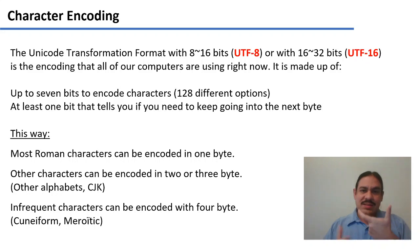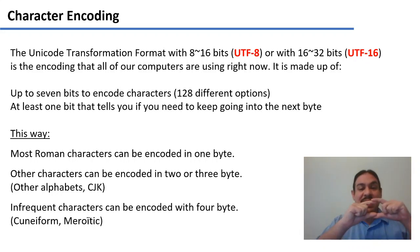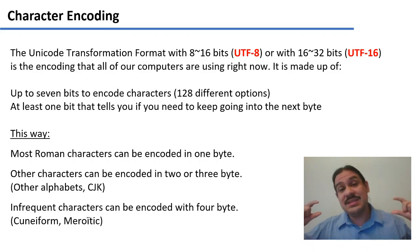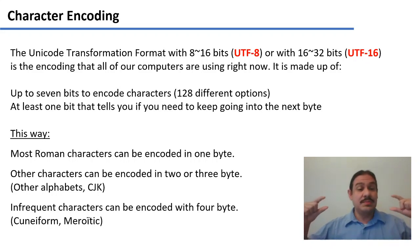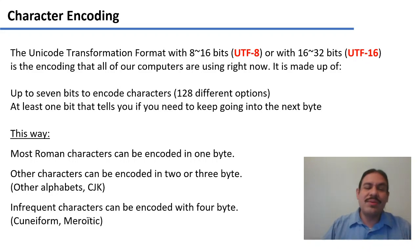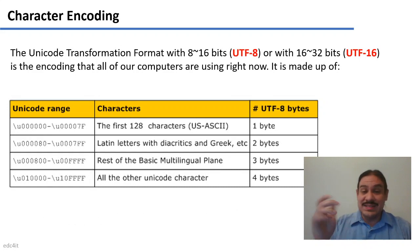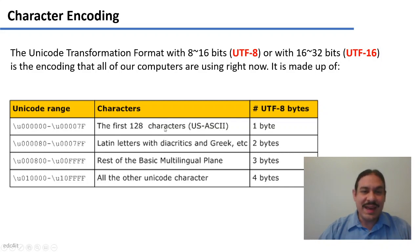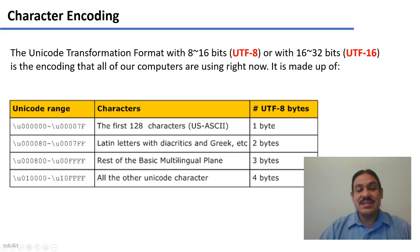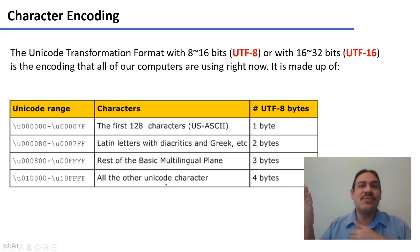With this variable-size approach, you can represent most Latin and Roman characters with one byte, many other alphabetical systems with two or three bytes — for example, writing systems from India use three bytes, characters from Spanish use two bytes — and very infrequent characters like cuneiform or Meroitic hieroglyphs can be represented with four bytes. In summary, UTF-8 uses one byte for the first 128 ASCII characters, two bytes for the Latin alphabet with diacritics and other alphabets like Greek, three bytes for scripts like Devanagari and many Chinese characters, and four bytes for relatively infrequent characters like cuneiform hieroglyphs.